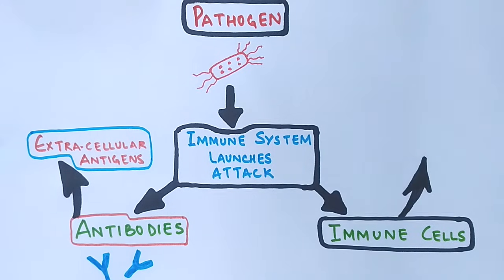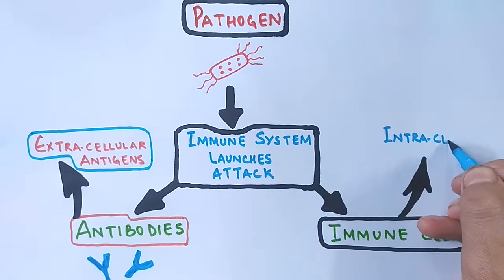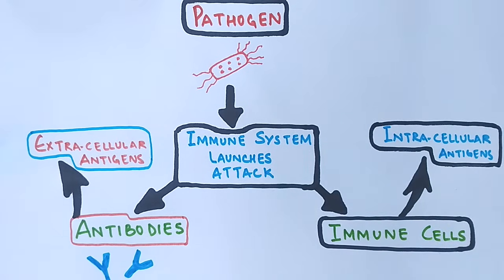Some immune cells engage to eliminate intracellular antigens. The immune system works in two ways: antibody-mediated immunity forms the humoral type of immunity, while immune cell-mediated immunity forms the cellular immunity.